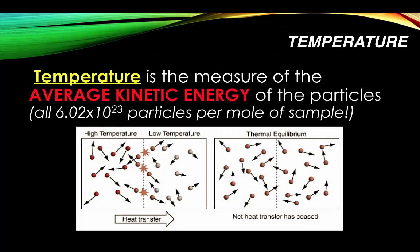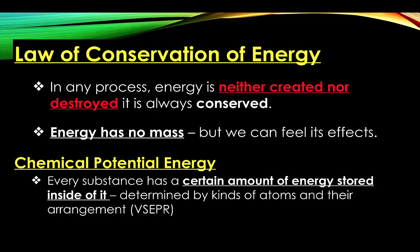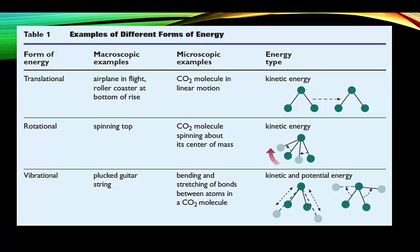Temperature is the measure of the average kinetic energy of all the particles in a sample — not just one little particle. The law of conservation of energy is similar to the law of conservation of mass: energy is neither created nor destroyed, so it has to come from somewhere. Energy has no mass, but we can feel its effects — for example, as heat. Light is also a type of energy. Chemical potential energy is the amount of energy stored inside a substance, determined by the kind of atoms and their arrangement.